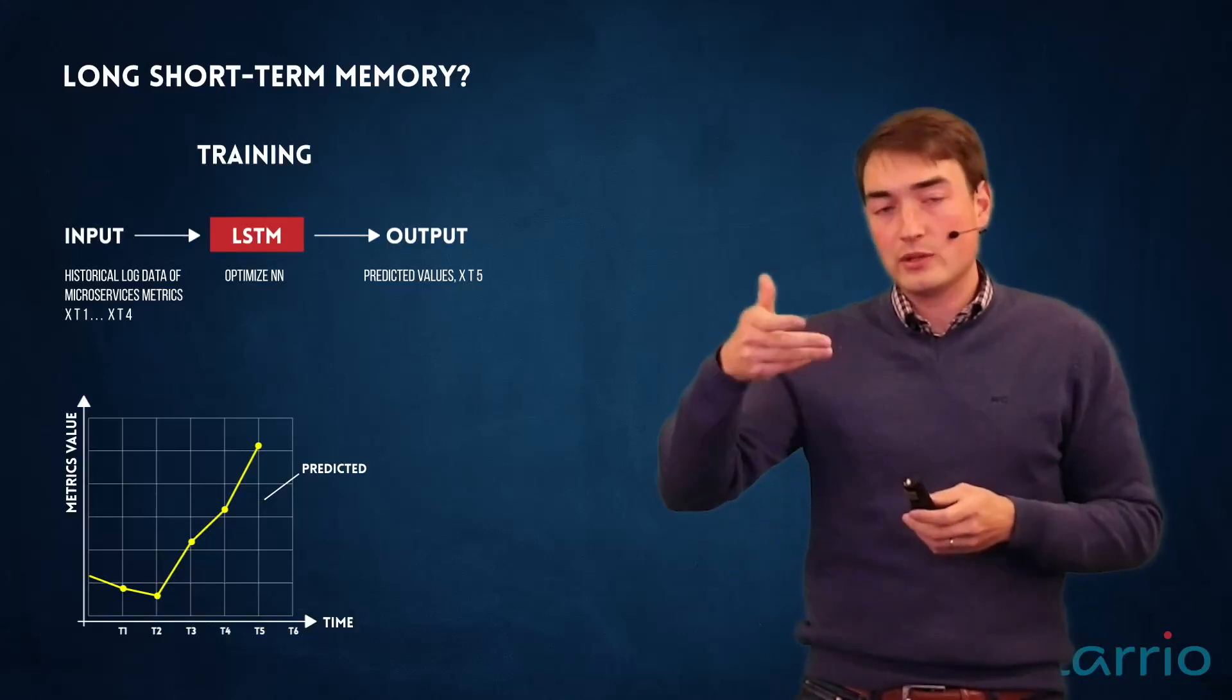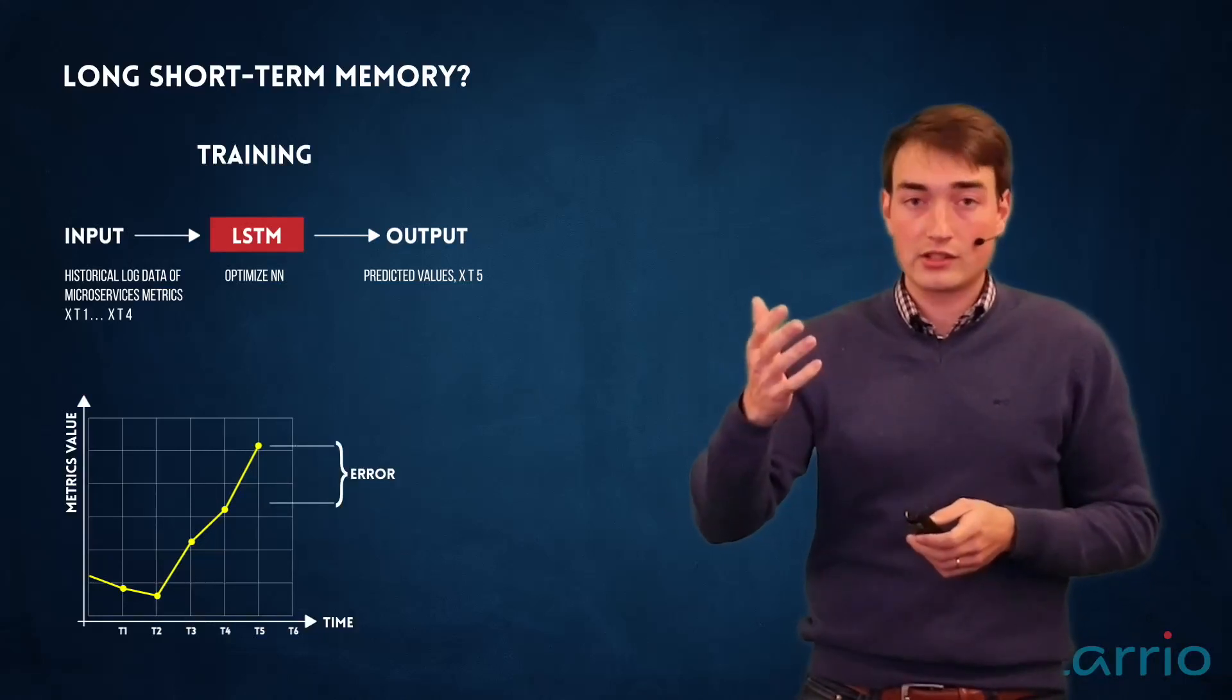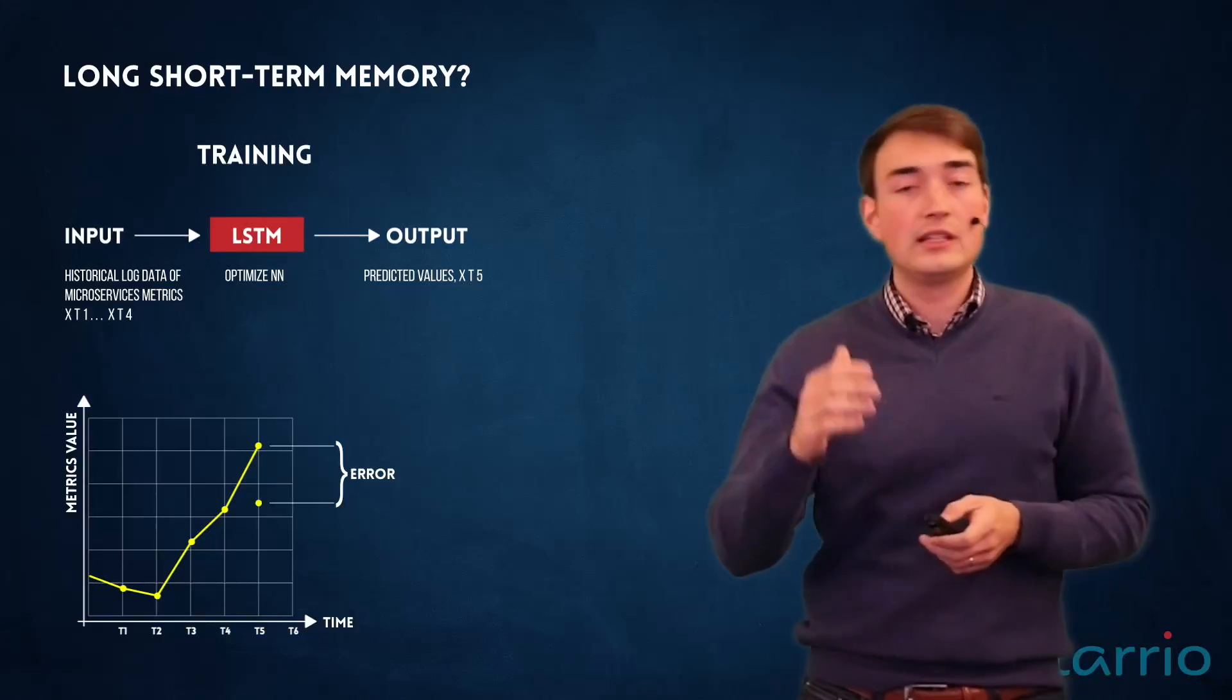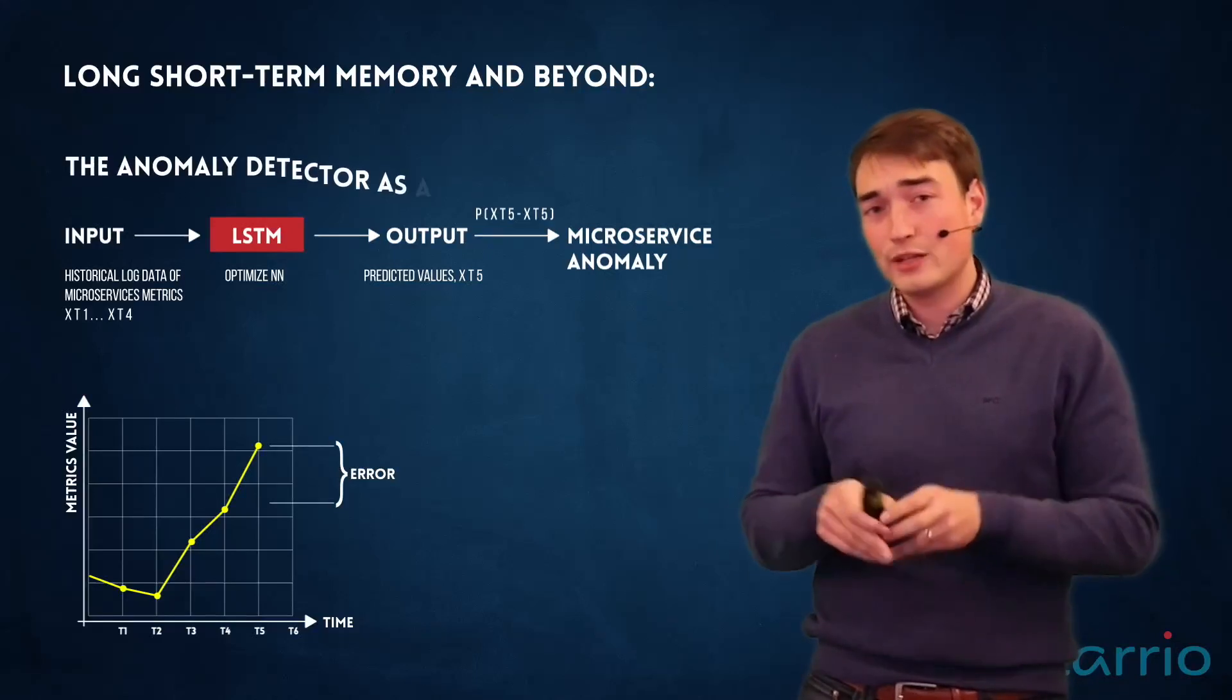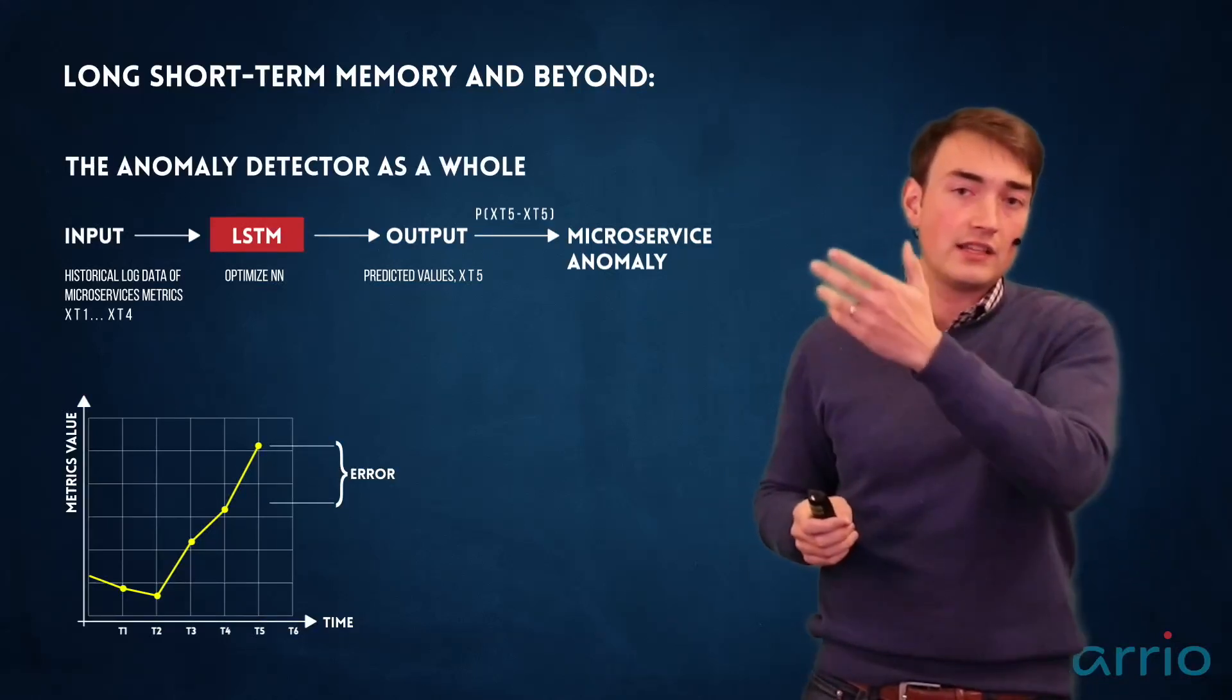then we can subtract them, then we have an idea about the error vectors of that. Once we have the error vectors and we know the probability density function of these error vectors, then we can see, well, is this an anomalous event yes or no.